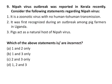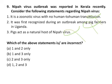Question number 9: A Nipah virus outbreak was reported in Kerala recently. The first statement says it is a zoonotic virus with no human-to-human transmission — this is wrong, as human-to-human transmission is also possible. The second says it was first recognized during an outbreak among pig farmers in Uganda — this is wrong, as it was first recognized in 1999 among pig farmers in Malaysia. The third says pigs act as the natural host for Nipah virus — this is also wrong, as fruit bats of the Pteropus genus are the natural hosts. All three statements are incorrect, so D is the correct answer.